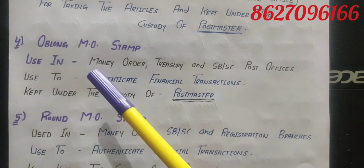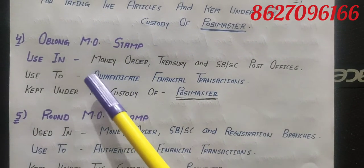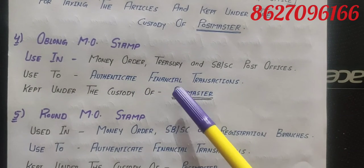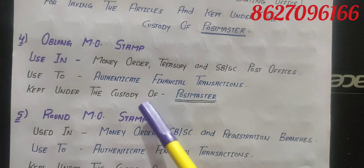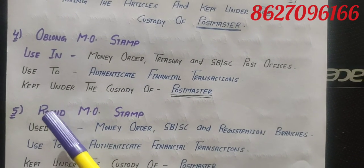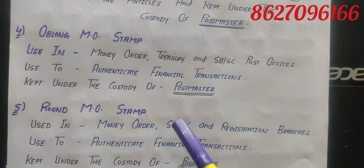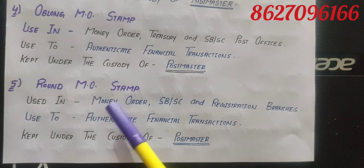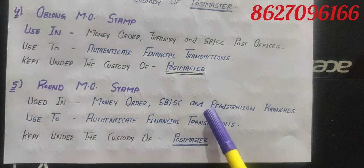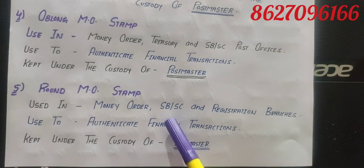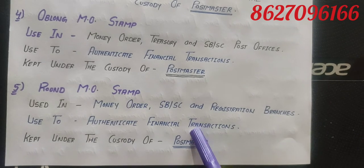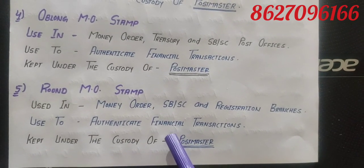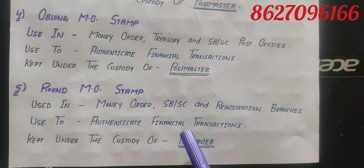The long money order stamp is used in Money Order Treasury and SBSC post offices. Its purpose is to authenticate financial transactions, and it is kept under the custody of the Postmaster. The round money order stamp is used in Money Order, SBSC and Registration Branches. It is also used to authenticate financial transactions and is kept under the custody of the Postmaster.